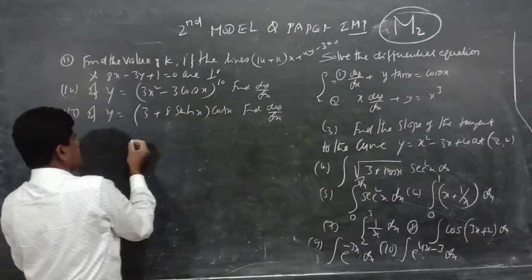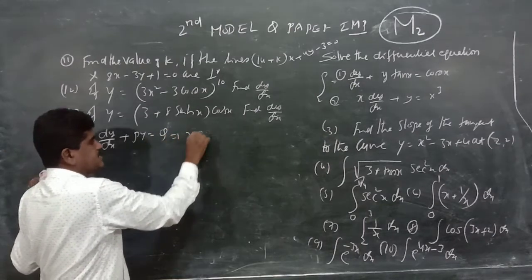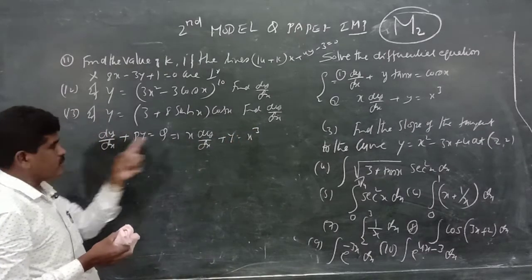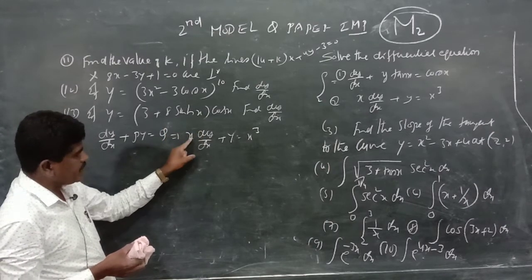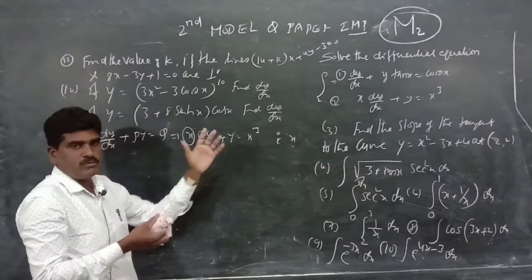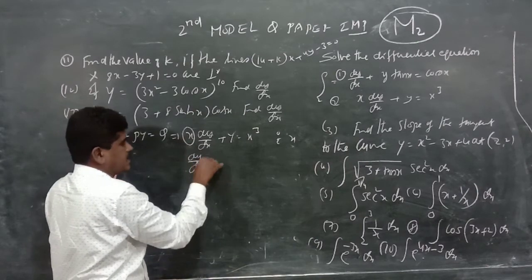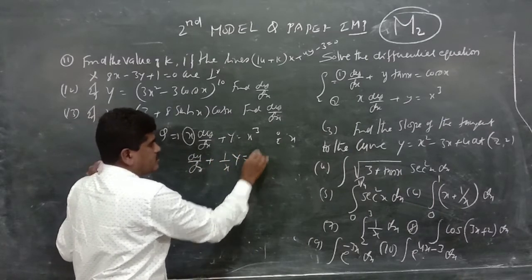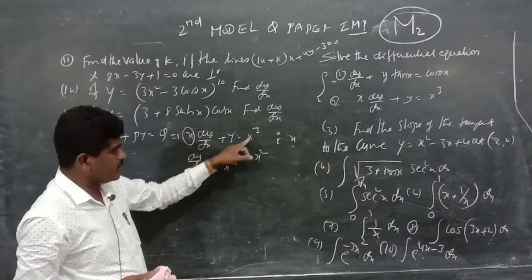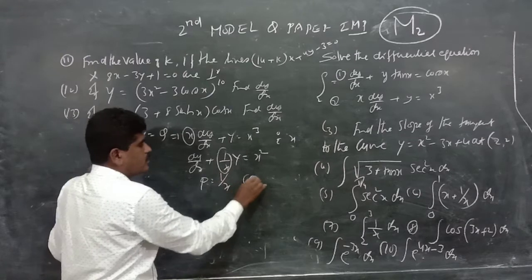The second standard linear equation is x·dy/dx plus y equals x³. The coefficient of dy/dx is x, not 1, so we divide both sides by x. This gives dy/dx plus (1/x)·y equals x³/x, which simplifies to dy/dx plus (1/x)·y equals x². So P equals 1/x and Q equals x².